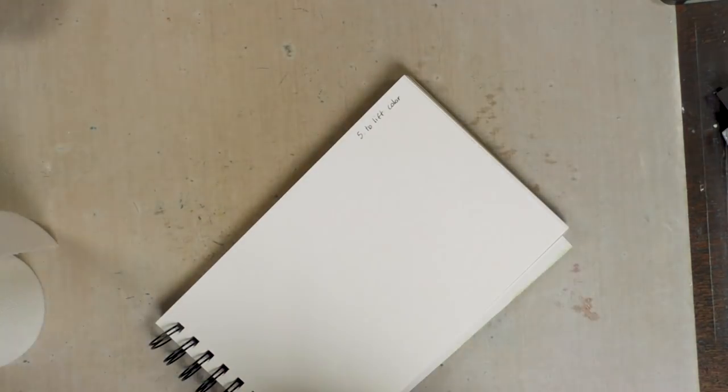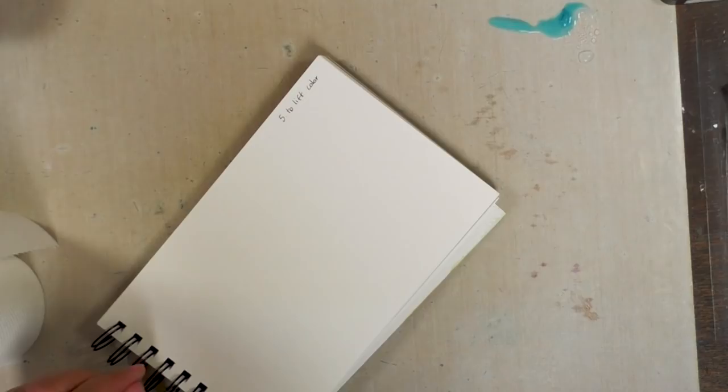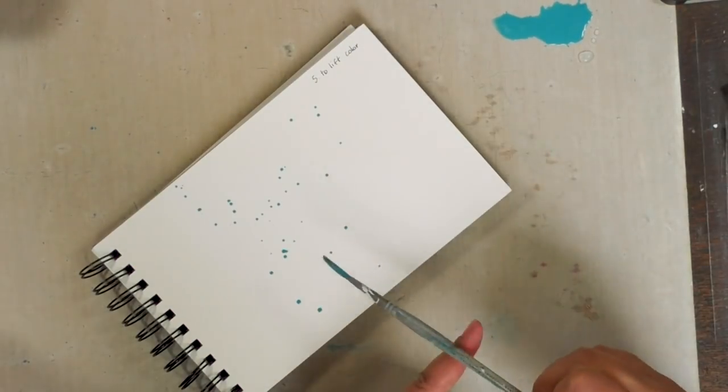Next up, technique number five: I'm going to use the kitchen roll to lift color. And I'm doing it this time with paint. Again, I can do it with any wet medium.